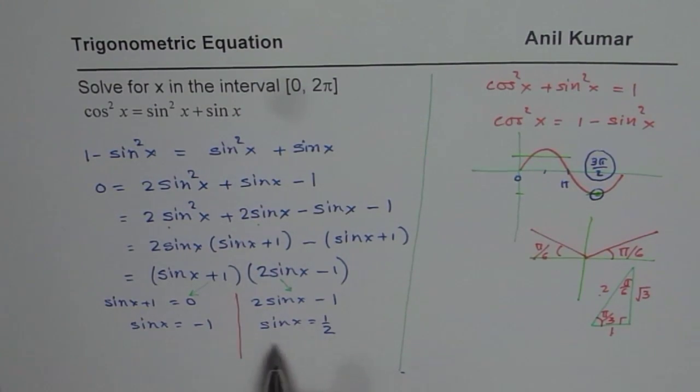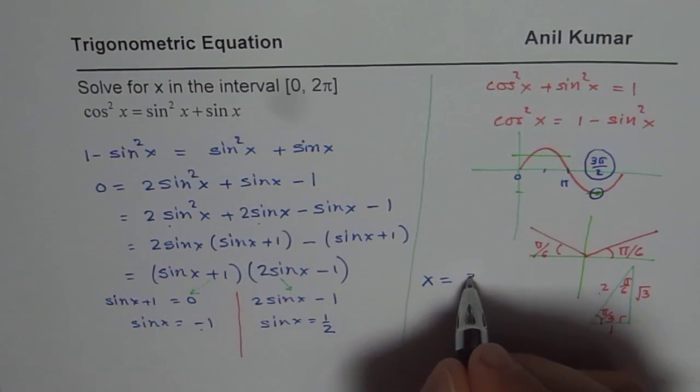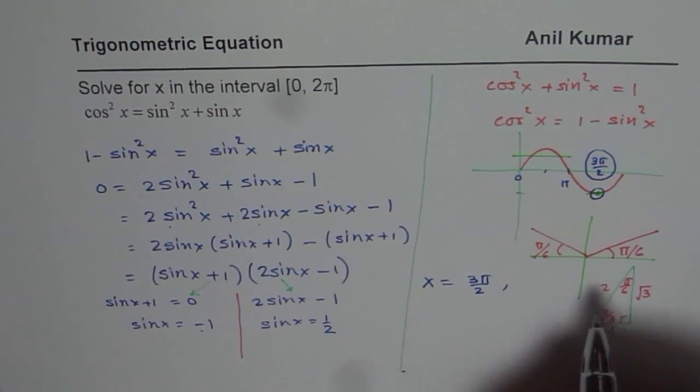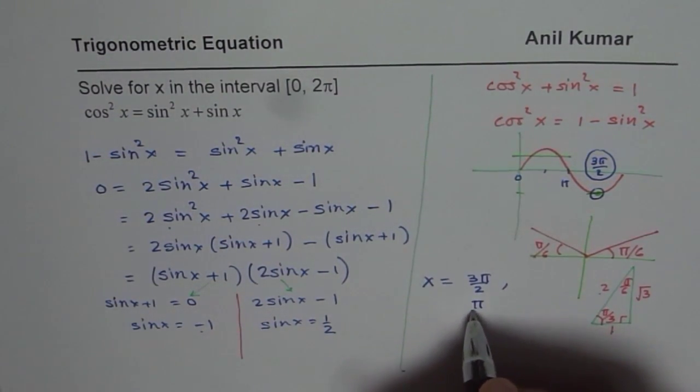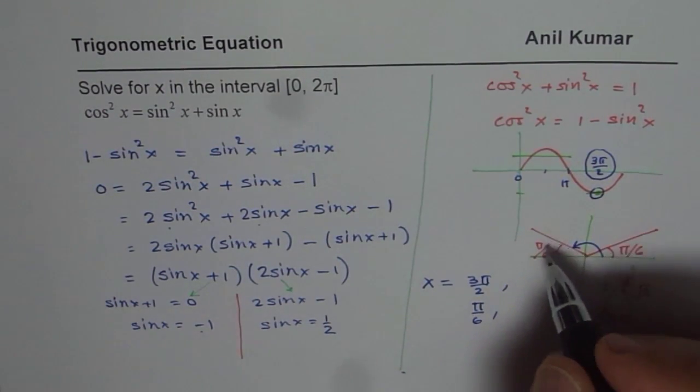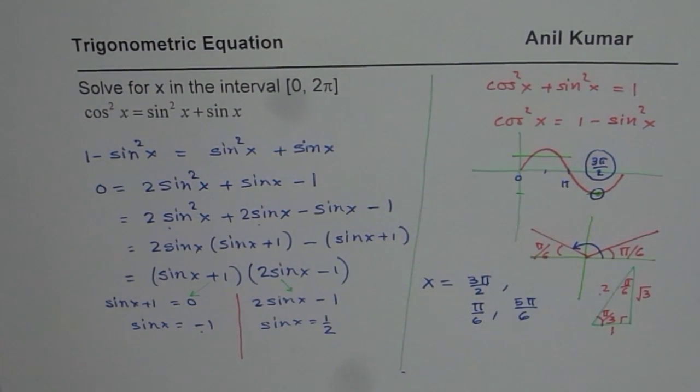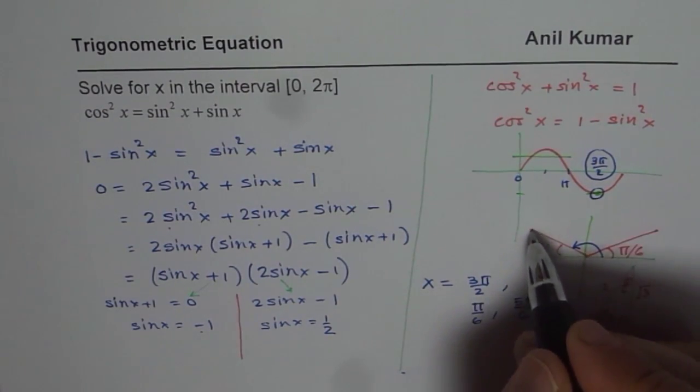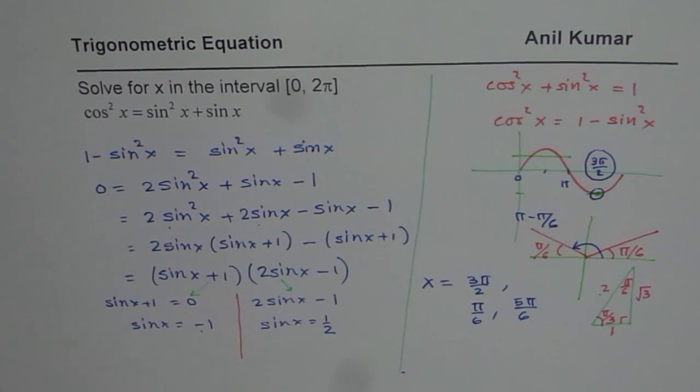Now we can write down all our solutions. So we have x equals minus 1 when it is 3π/2. And it is half at two values. One of them is π/6. The other one is the principal angle π - π/6, which is 5π/6. So these are the three solutions. So that is how we can get all the solutions in the interval 0 to 2π for the given equation.